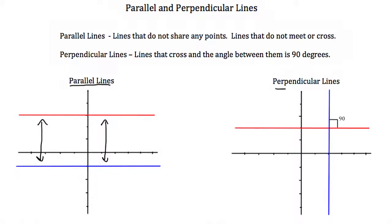Here's an example of perpendicular lines. They meet at one point and the angle between them is a right angle, or a perfect 90 degrees.